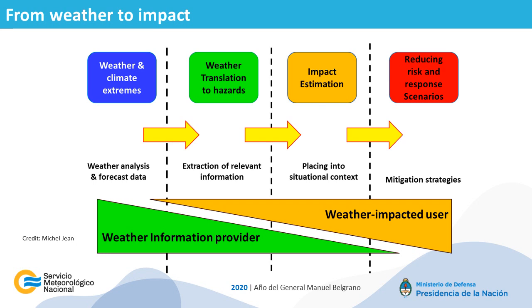After knowing the elements to consider, the next question is: how can this transition be done? This figure shows a conceptual model where the transition from weather information to weather impact is done by successive steps — from weather and climate analysis to the application of mitigation strategies — by translating weather to hazards and placing them into context to have an impact estimation.